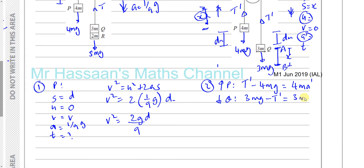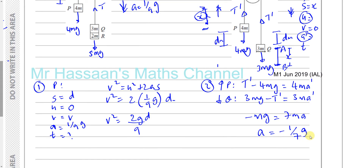Adding these two equations together, the tensions cancel, giving −4mg + 3mg = 7mA', so −mg = 7mA'. The m's cancel and we get A' = −G/7, which makes sense because it's a deceleration — the system is going to come to rest eventually. So that's the new acceleration.